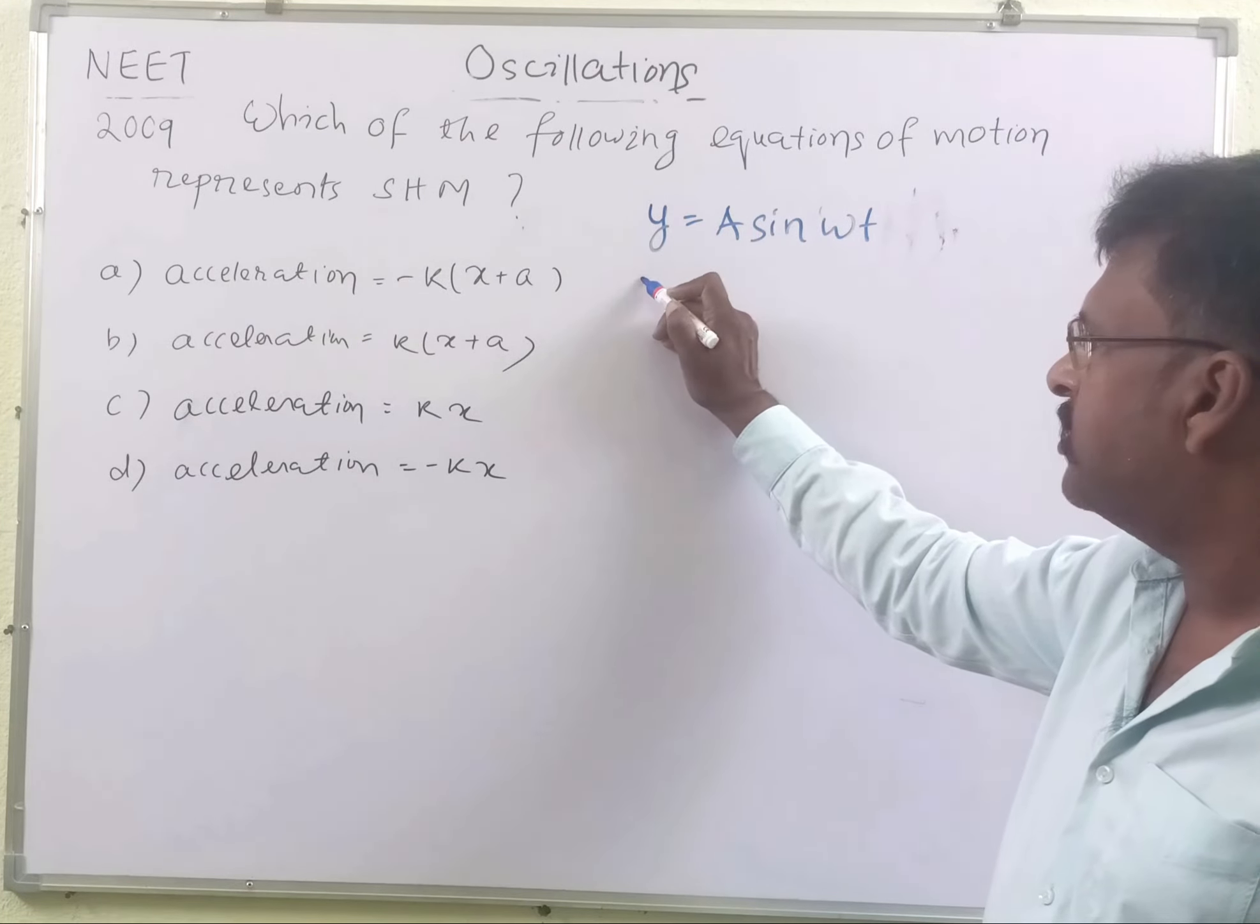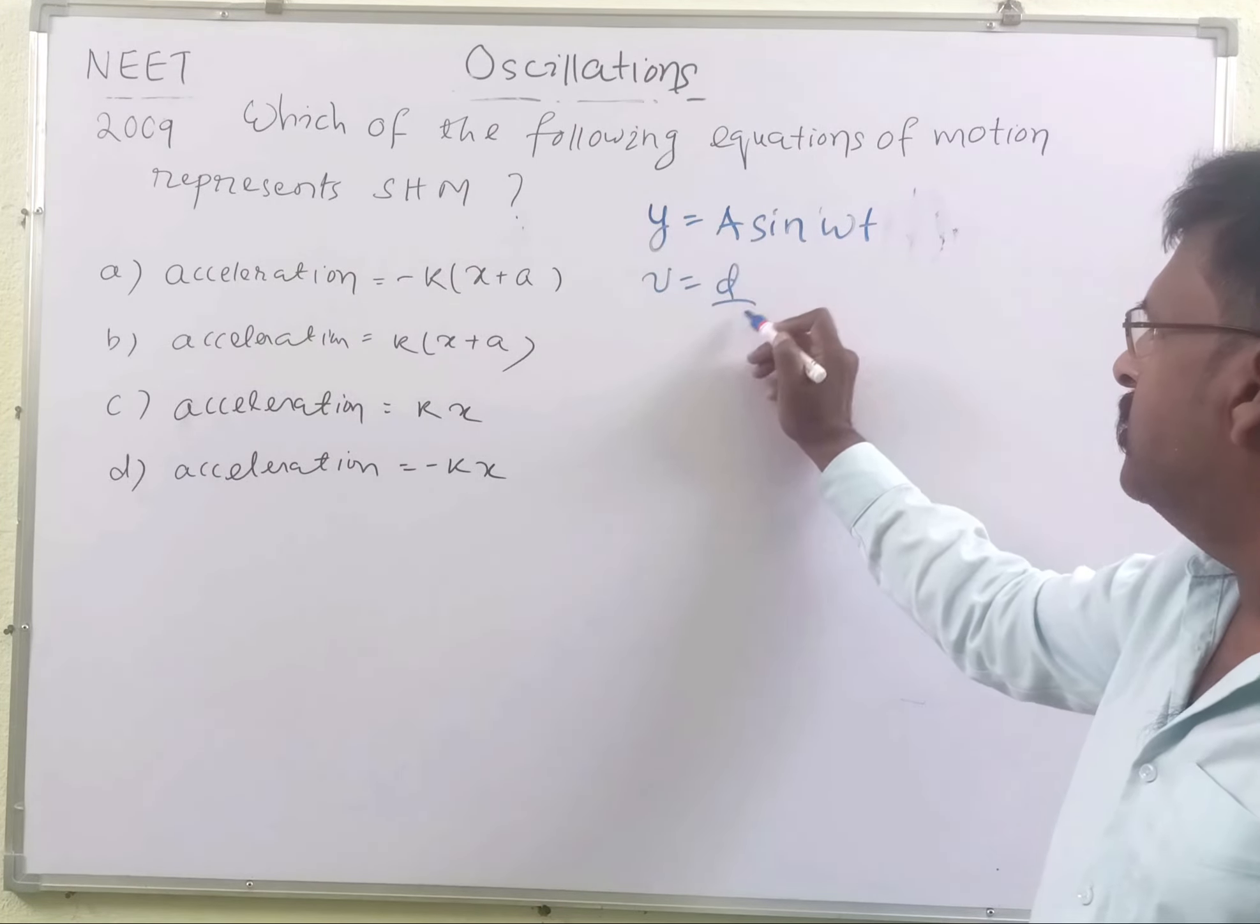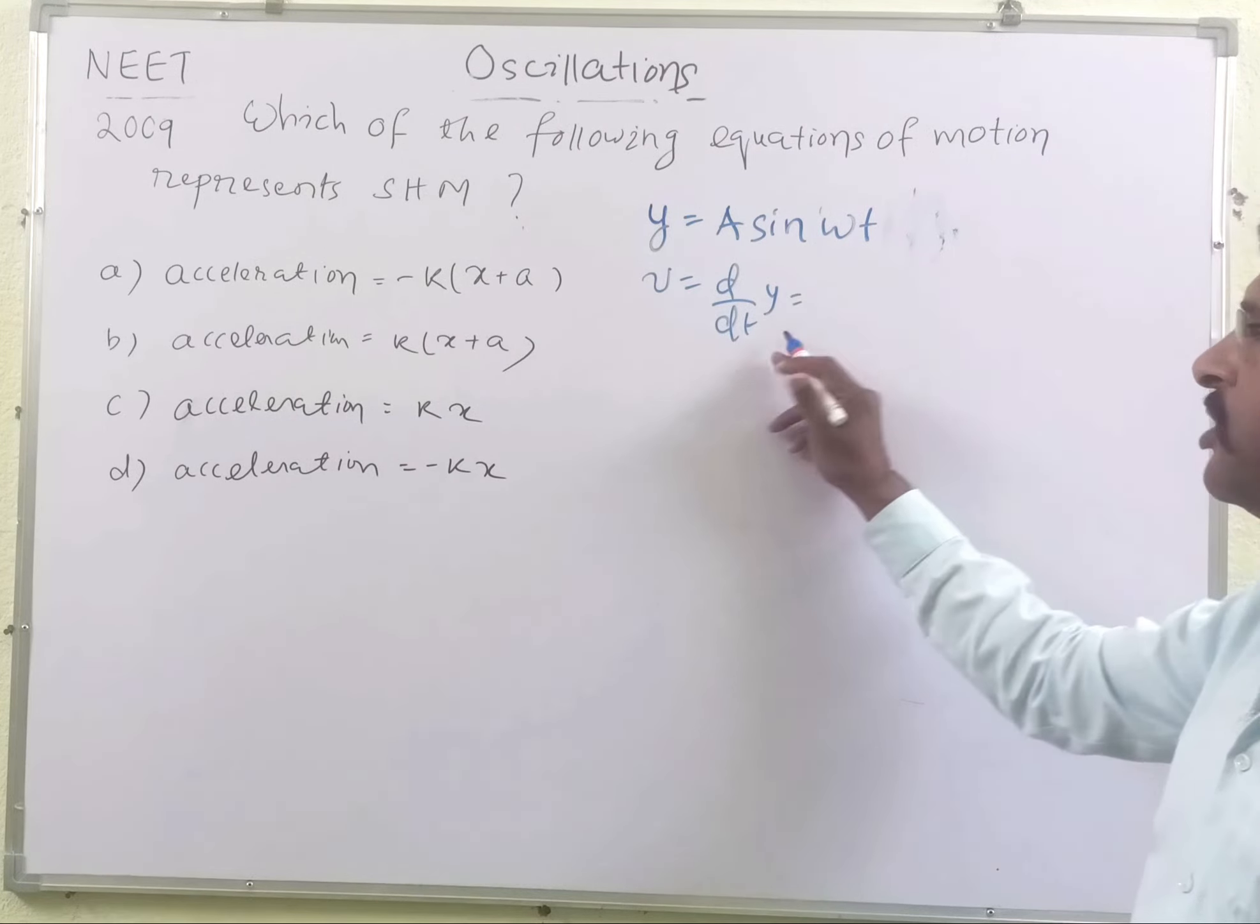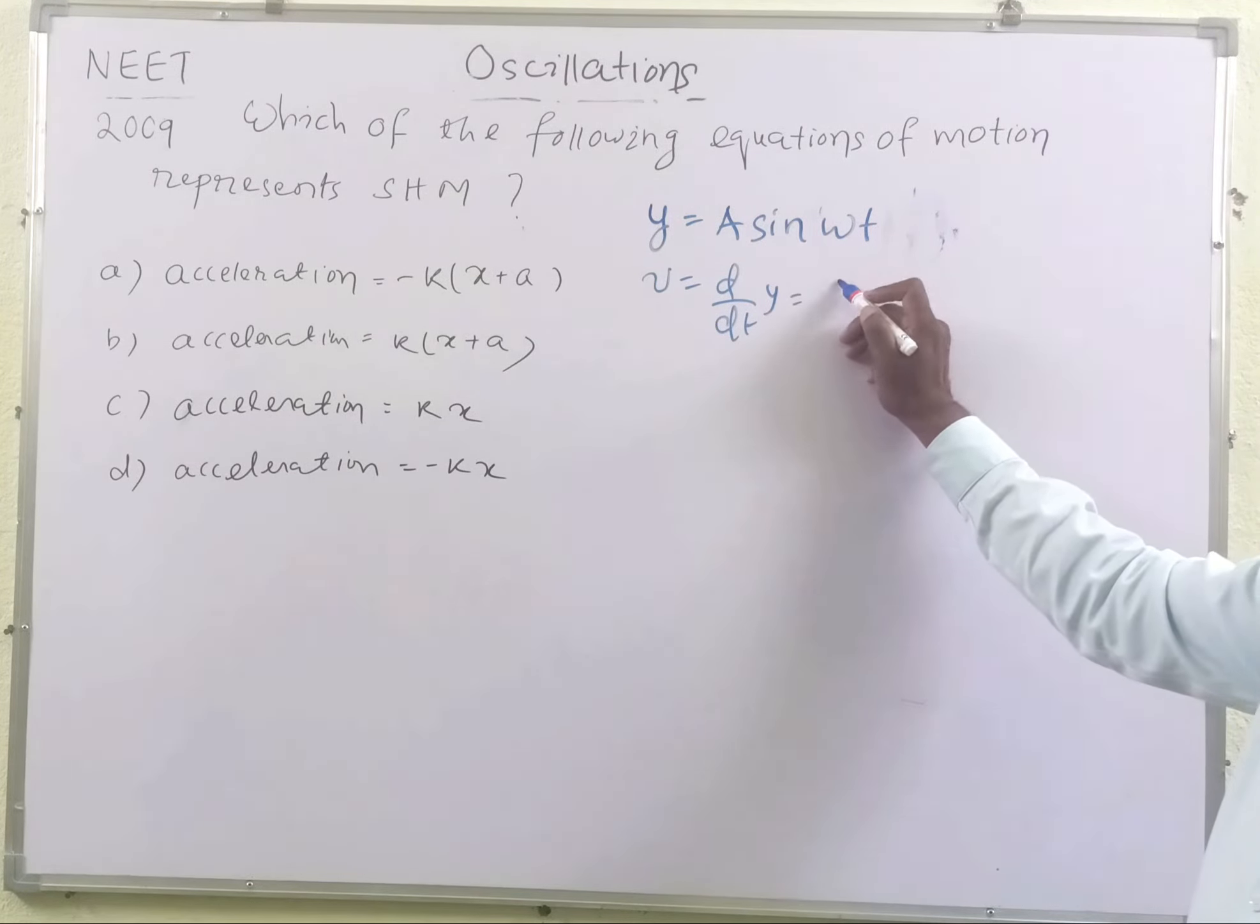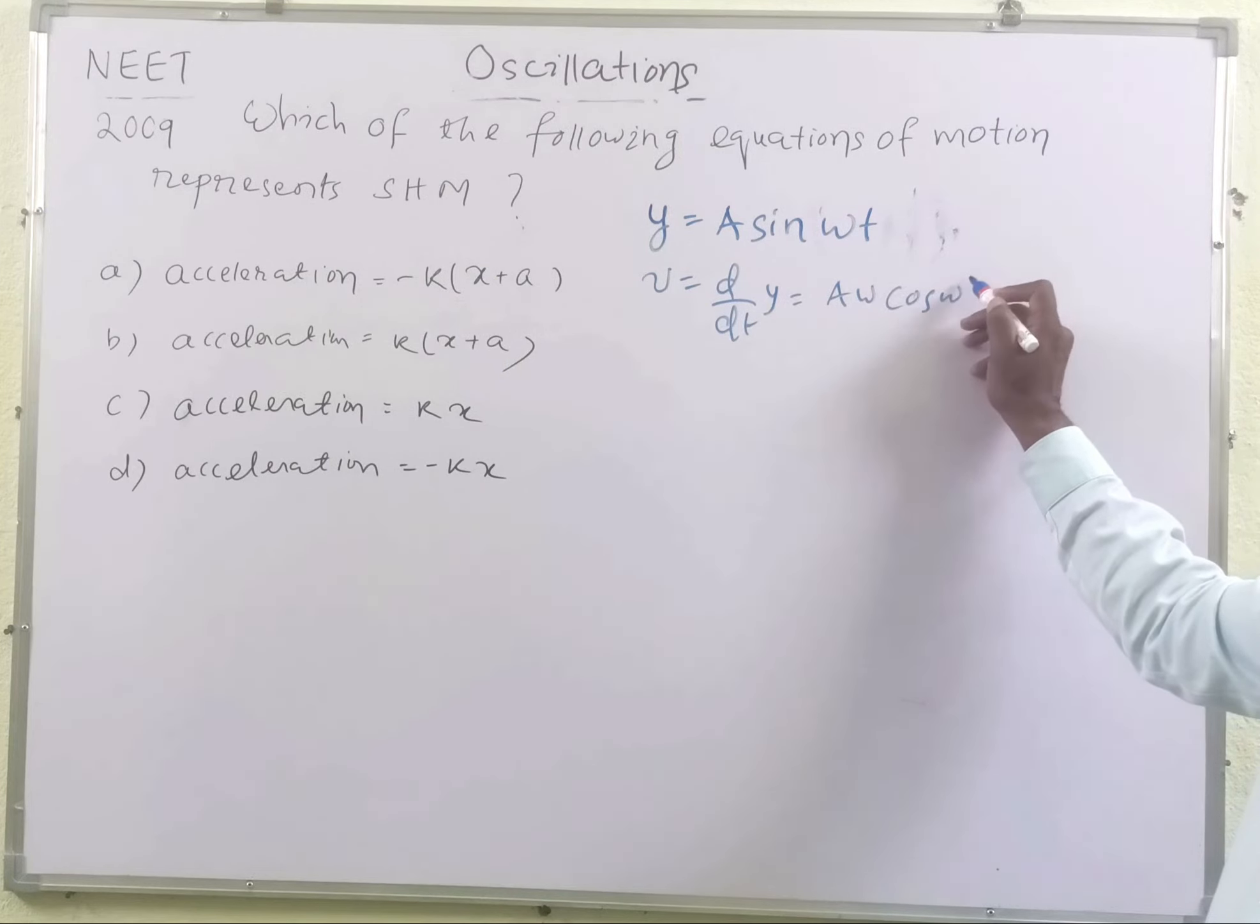Then what will be the velocity? Velocity will be equal to time derivative of the displacement vector, dy/dt or the position vector. This is v = Aω cos(ωt).